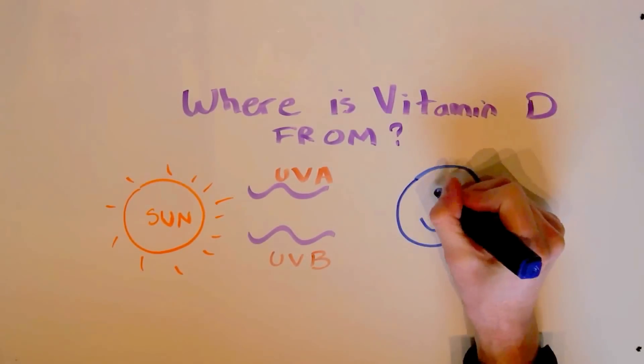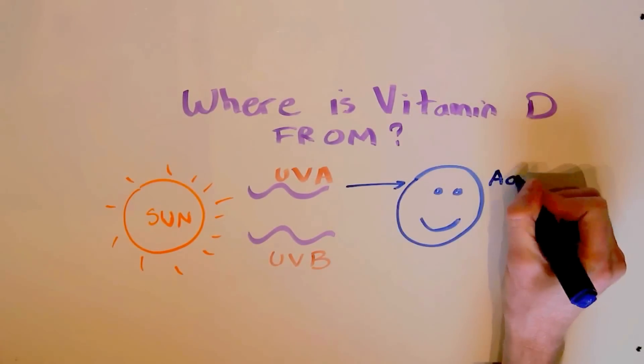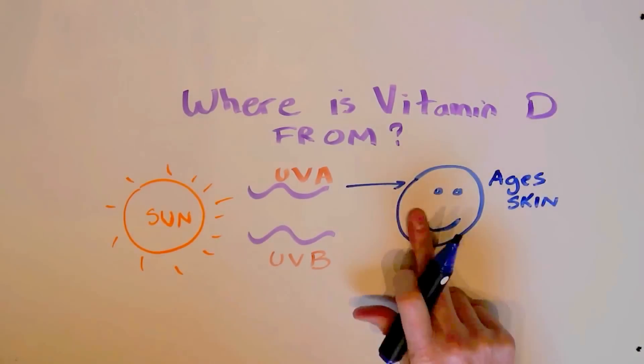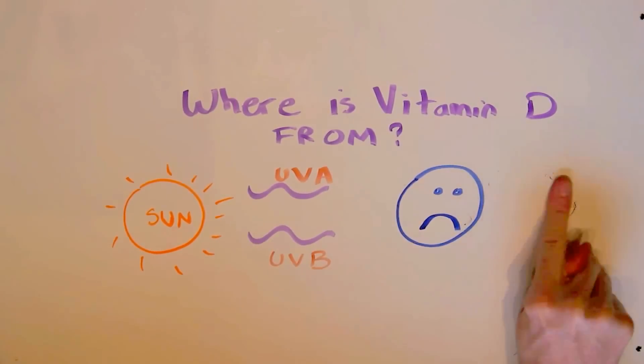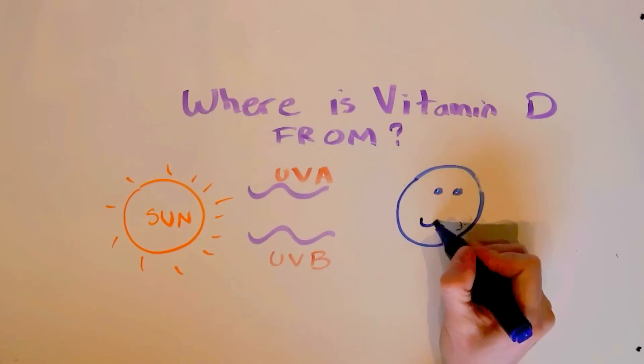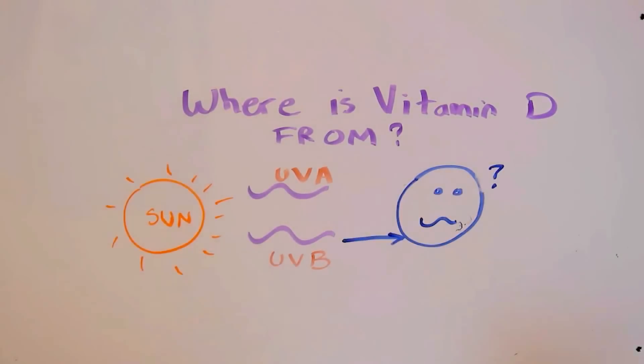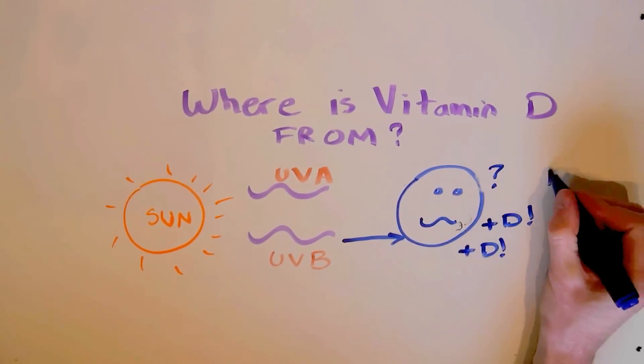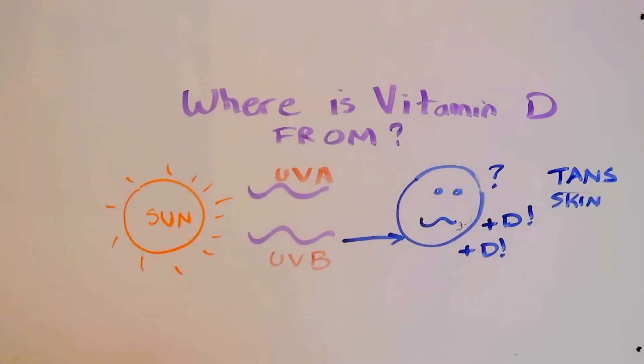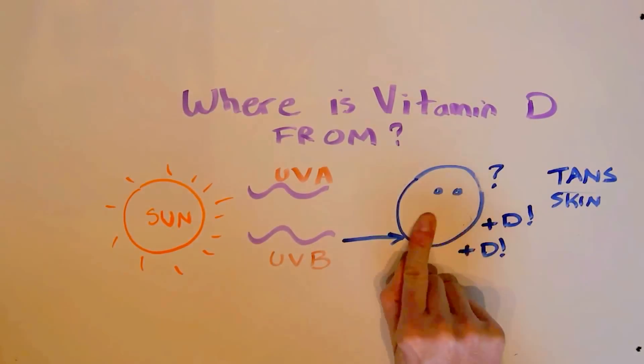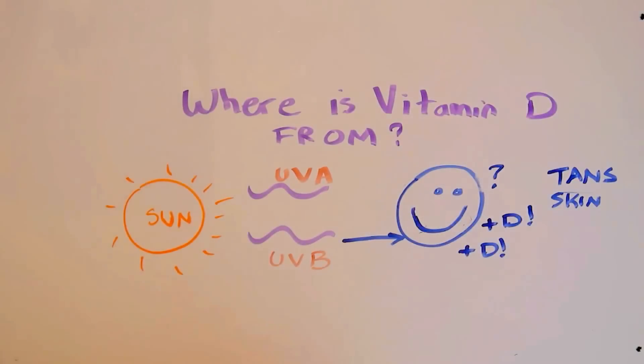See, the sun gives us two kinds of radiation. UVA, which ages our skin, and makes people very unhappy, and wrinkly, and sad, and makes them look old. And the other one is UVB. UVB gives us vitamin D. It also burns our skin. And most people like to call that tanning. And that makes people happy.